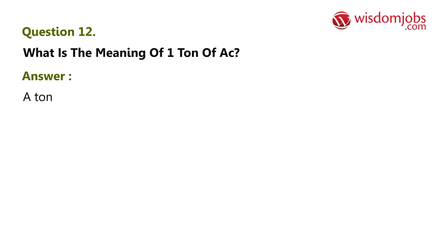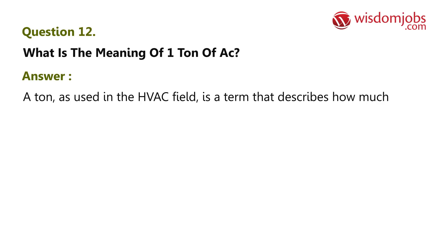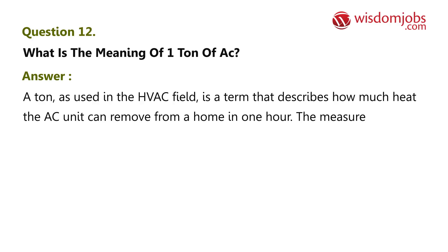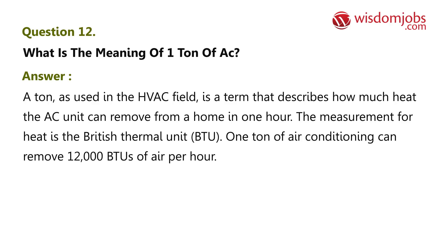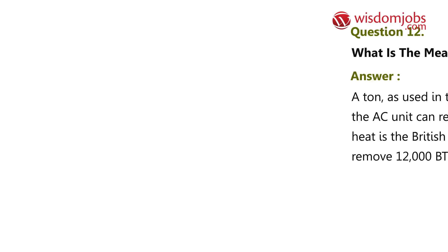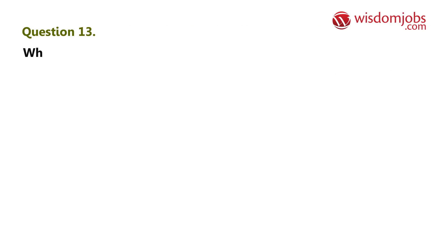Question 12: What is the meaning of one ton of AC? Answer: A ton, as used in the HVAC field, is a term that describes how much heat the AC unit can remove from a home in one hour. The measurement for heat is the British thermal unit (BTU). One ton of air conditioning can remove 12,000 BTUs of heat per hour.